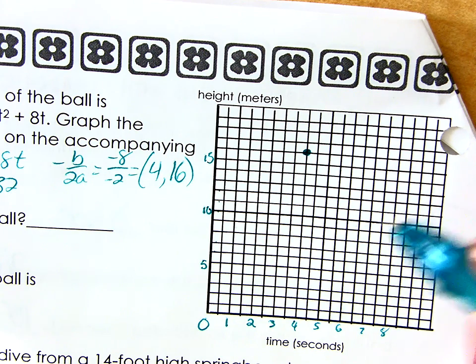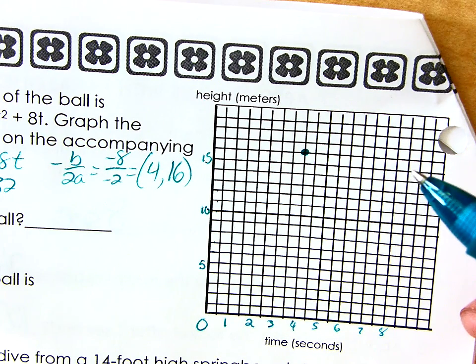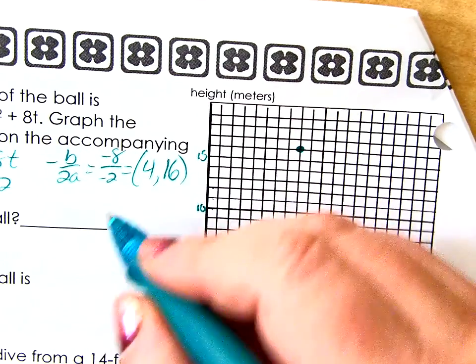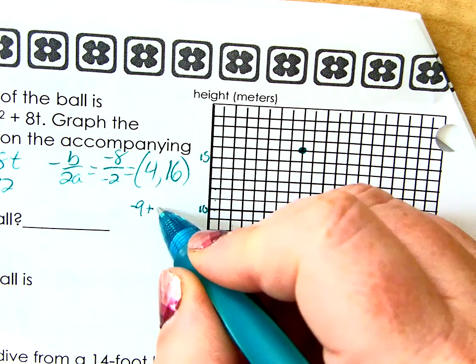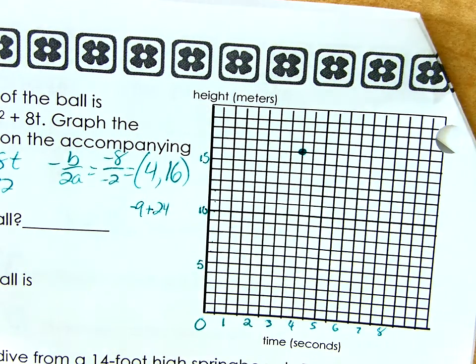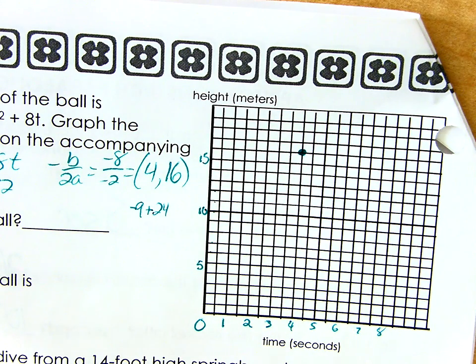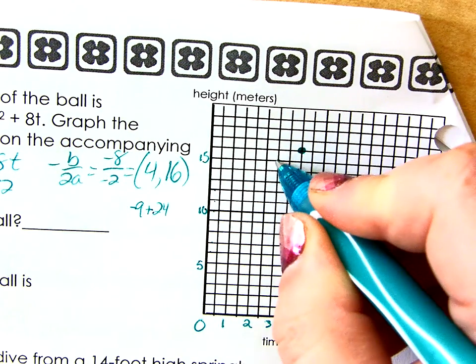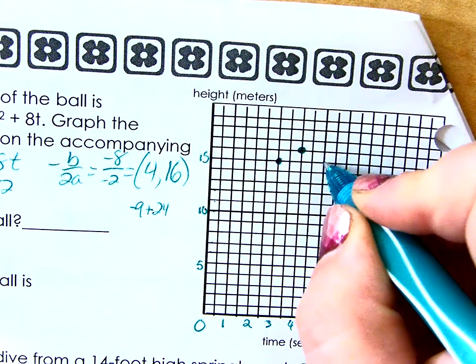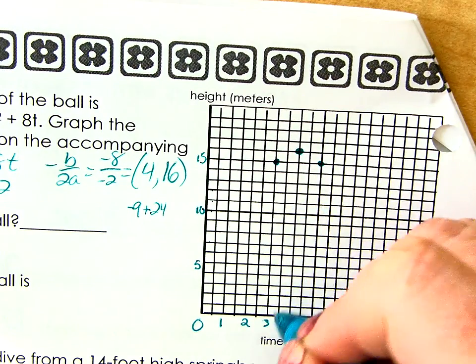Alright, let's plug in some other numbers. At three seconds, where would the height of my ball be? At what? Three seconds. How do I figure that out? Just plug in three for T. Fifteen. So remember, it's a parabola. Buy one, get one free. So is that three, fifteen? Yep, three comma fifteen.